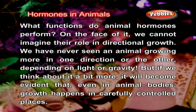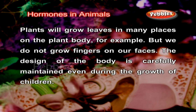Remember that plants have hormones that control their directional growth. What functions do animal hormones perform? On the face of it, we cannot imagine their role in directional growth. We have never seen an animal growing more in one direction or the other depending on light or gravity. But if we think about it a bit more, it will become evident that even in animal bodies, growth happens in carefully controlled places. Plants will grow leaves in many places on the plant body, for example, but we do not grow fingers on our faces. The design of the body is carefully maintained even during the growth of children.